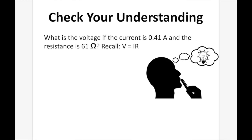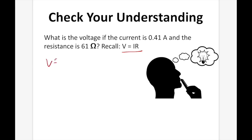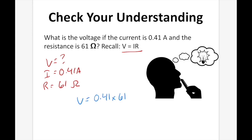Check your understanding. What is the voltage if the current is 0.41 amps and the resistance is 61 ohms? Remember, V = I × R. We know the current is 0.41 amps and the resistance is 61 ohms. So V = 0.41 × 61 = 25.01 volts. We need two significant digits, so our final answer is 25 volts.